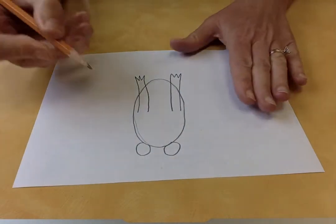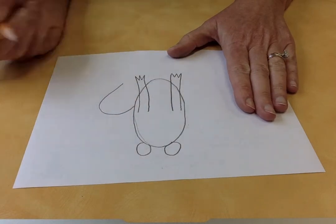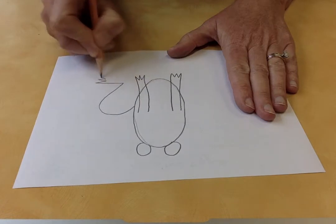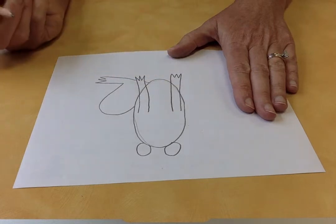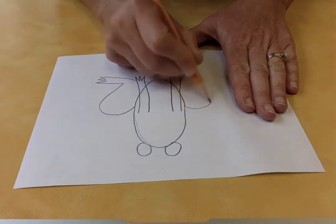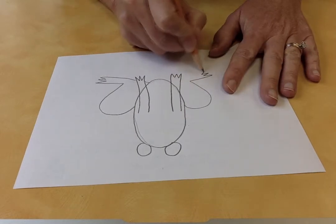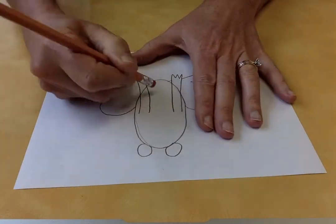And then for his back legs, we're gonna do a bump and then a big foot with pointy toes, and we're just gonna draw that all the way back to the body. Same on the other side - big bump, big foot with pointy toes. There we go.